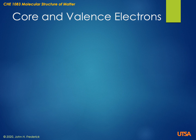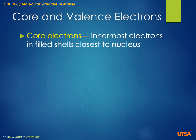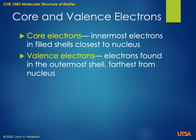I want to show how the structure of the periodic table helps us understand something fundamental about different types of electrons. Core electrons are the innermost electrons — they are in the filled shells closest to the nucleus. Every shell that is completely full and close to the nucleus represents core electrons. Valence electrons, by contrast, are found in the outermost shell, farthest from the nucleus. Most of the time, the valence electron shells are not full — they still have vacancies where a few more electrons could fit.